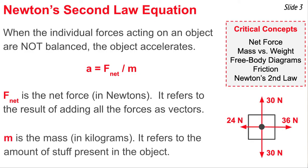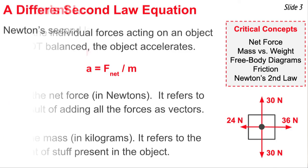Mass refers to the quantity of stuff present in an object. It's measured in kilograms and can usually be calculated if we know the weight of the object. If we know the weight and divide it by g, 9.8 Newtons per kilogram, we can get the mass of the object.